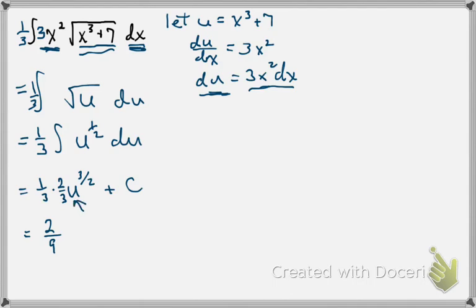And the other thing we have to do is substitute back. Our integral did not begin in terms of u. It began in terms of x. So we have to substitute back. But that's okay. We know exactly what to substitute back. Because we have our substitution right there. So we just have to substitute back in the x cubed plus 7. So this is going to be x cubed plus 7 to the 3 halves plus c.